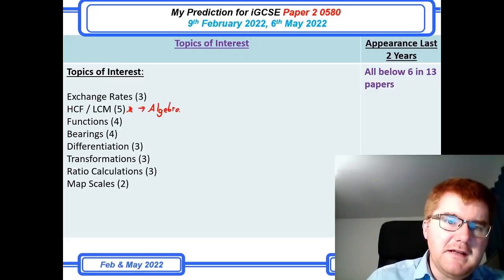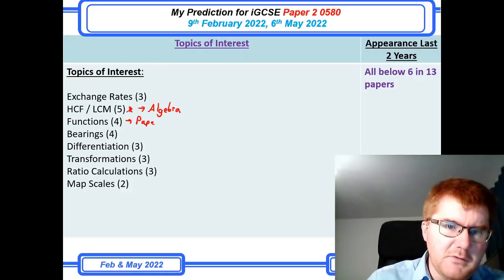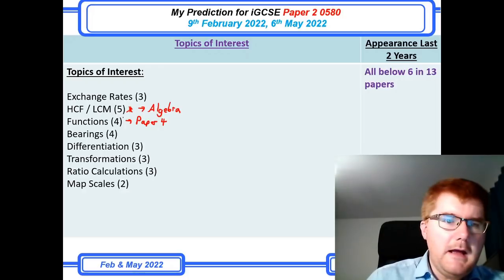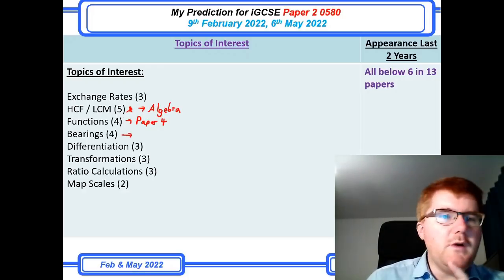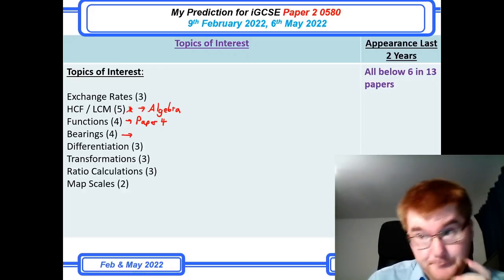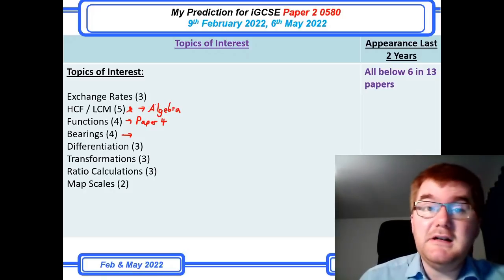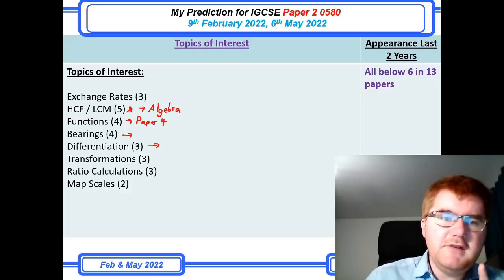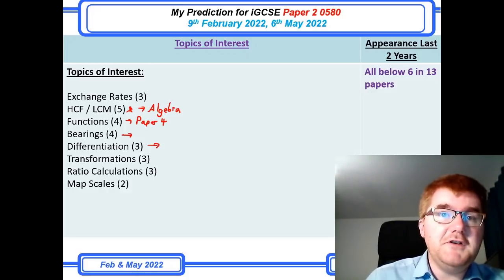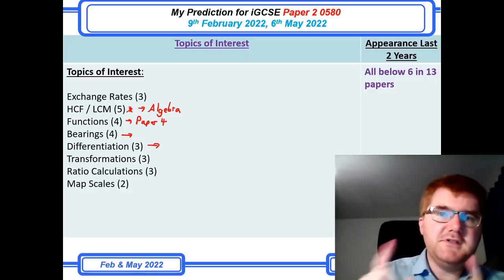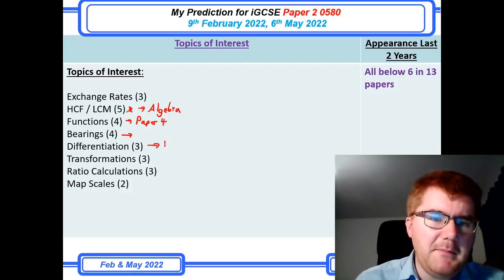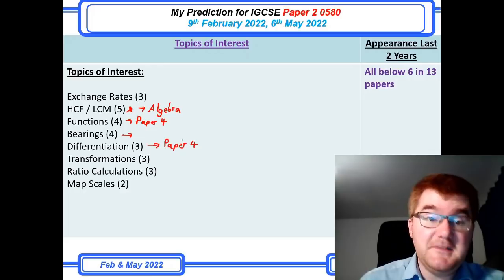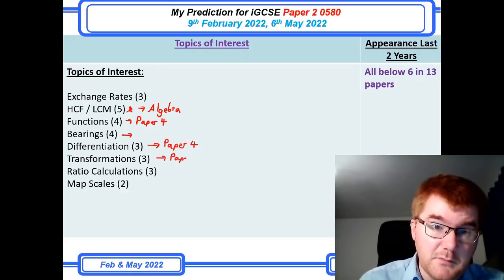Functions is generally more of a paper 4 topic anyway, so this is why it comes in quite low on paper 2. Bearings — I've seen one question where you actually have to draw a bearing yourself, but generally speaking you just need to calculate bearings using angle facts. Differentiation — I did a really great differentiation video series for 0580 — but generally it doesn't really come up on paper 2, it's more a paper 4 topic towards the end. Transformations also fit into that category as well.